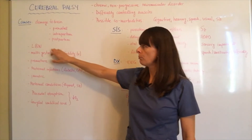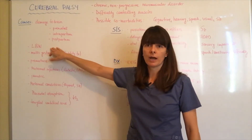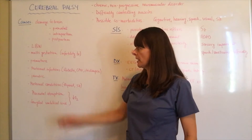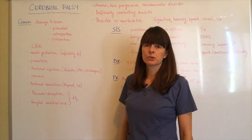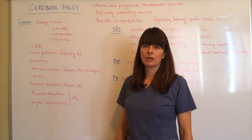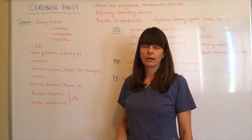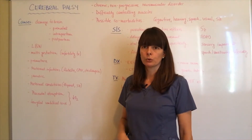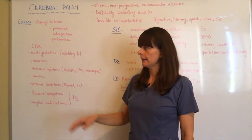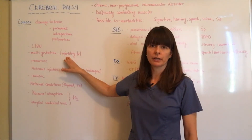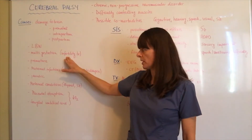Low birth weight infants are at higher risk for developing cerebral palsy, as well as multiple gestation infants — so twins, triplets, quadruplets — who are usually at a higher incidence of being premature. Multiple gestation is also related to infertility treatment, so there seems to be a relationship there.